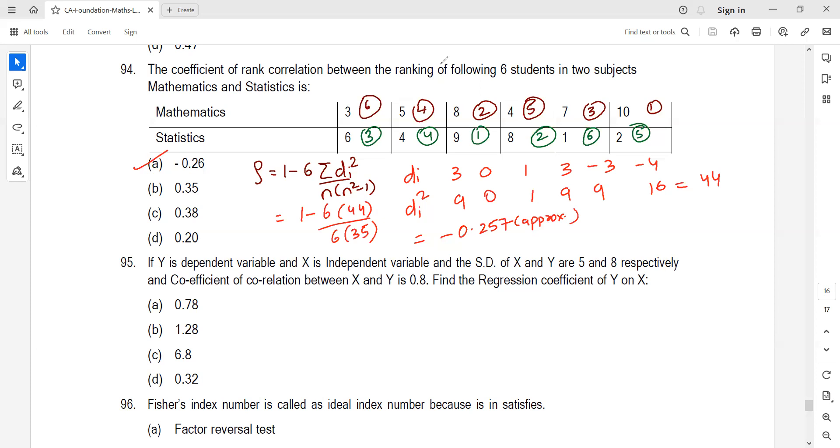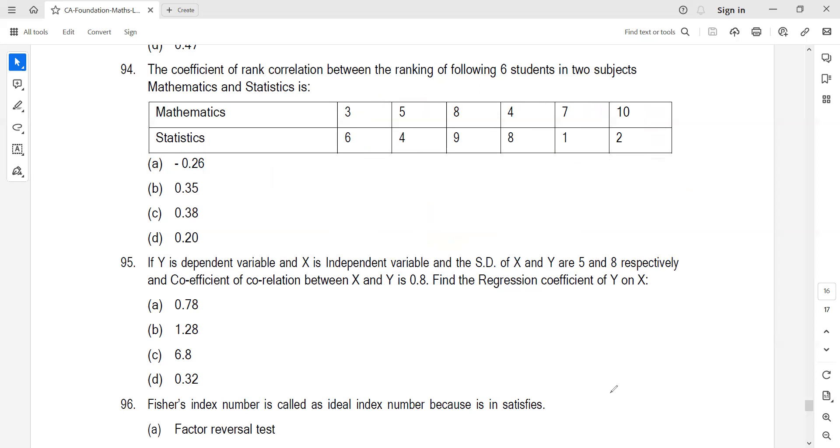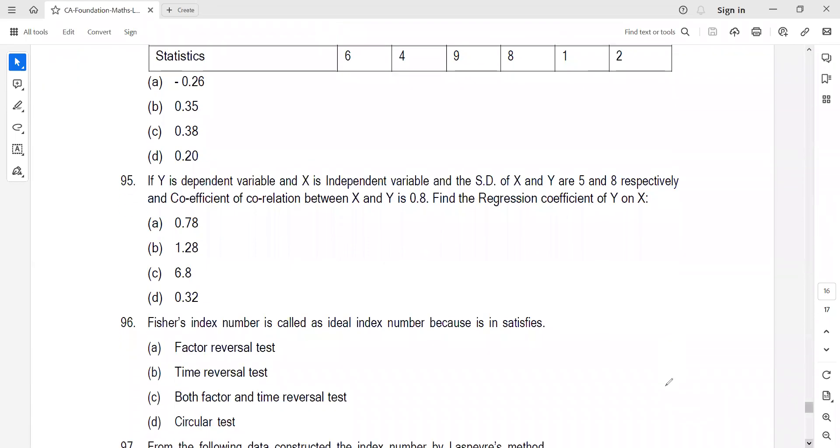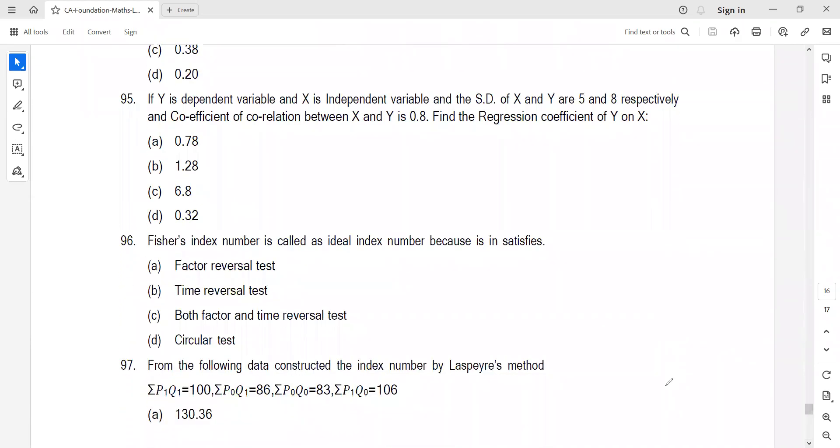Y is dependent variable, X is independent. Standard deviation of X is 5, standard deviation of Y is 8, R is 0.8. Regression coefficient bYX equals R into standard deviation Y upon standard deviation X. This is 0.8 into 8 by 5, which equals 1.28. Answer is B.